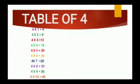We will repeat it again. Four ones are four, four twos are eight, four threes are twelve, four fours are sixteen, four fives are twenty, four sixes are twenty-four, four sevens are twenty-eight, four eights are thirty-two, four nines are thirty-six, four tens are forty.